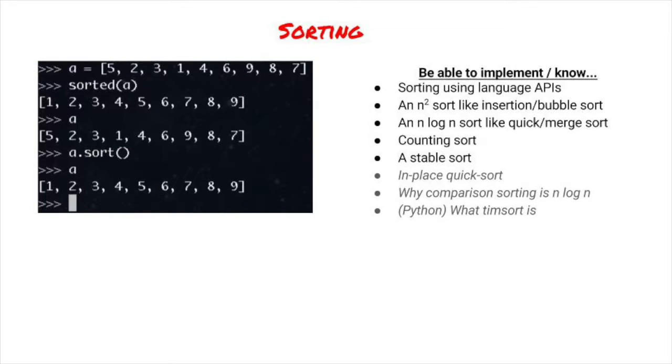Next, we'll talk about sorting. Implementing sorting in a whiteboard is rare, but you should be familiar with how sorting works. You should also be familiar with your language's sorting facilities. You should know how to implement one n-squared sort, such as insertion sort or bubble sort. For quicksort, you should know how to implement one expected n-log-n sort, such as merge sort or quicksort.